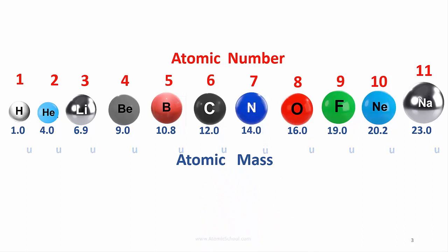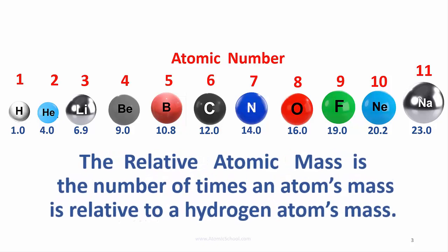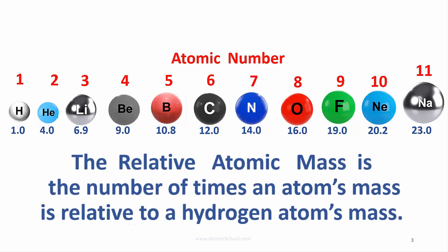Written without the unit U, the atomic mass is called the relative atomic mass. The relative atomic mass is the number of times an atom's mass is compared to, or relative to, a hydrogen atom's mass.